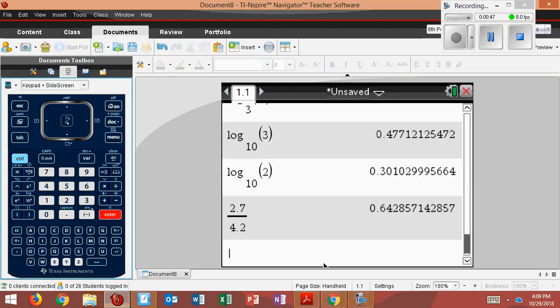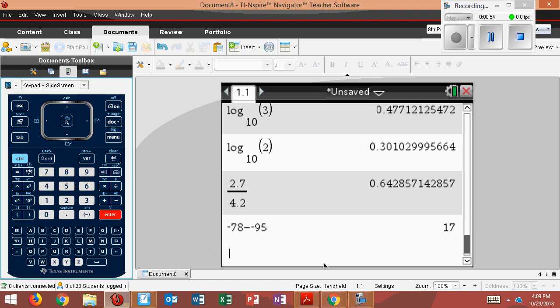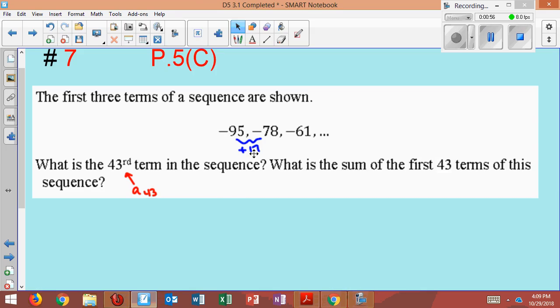So I'll do it over here: negative 78 minus negative 95. That's where you get the 17. So it's getting 17 greater. Let's check to see if this is also 17 greater. It looks like it is. So since they're adding by 17, this is arithmetic.